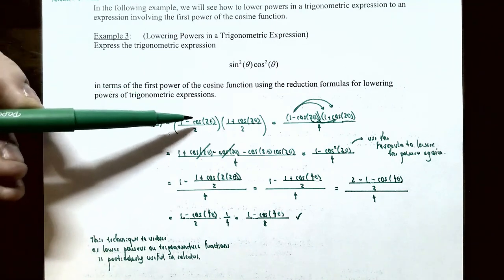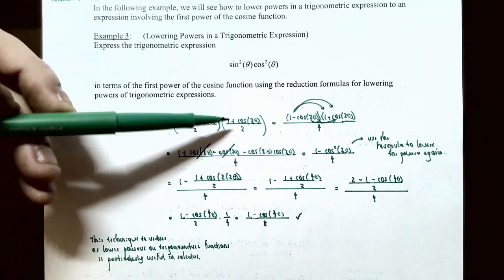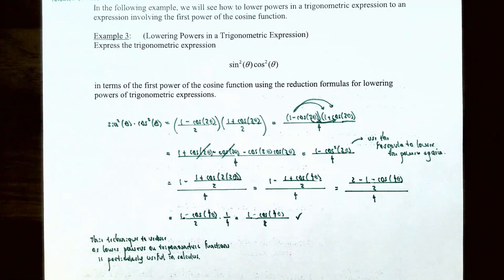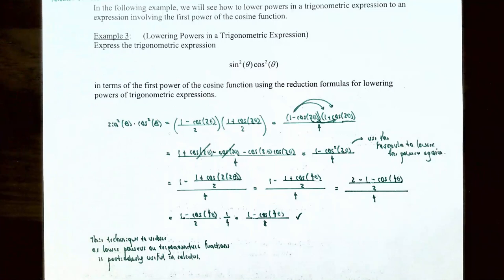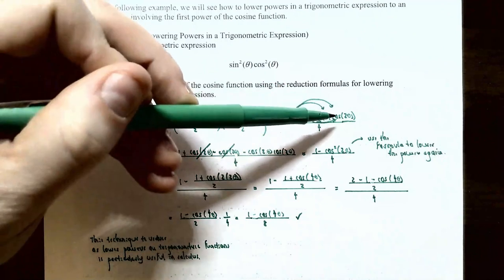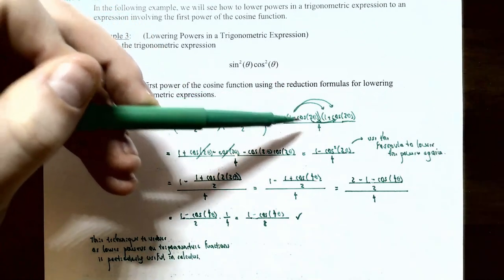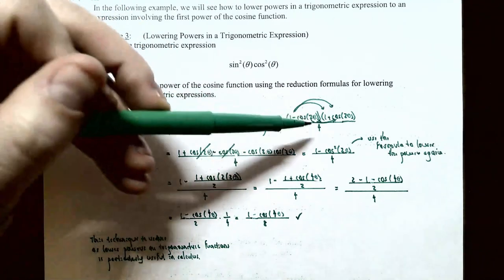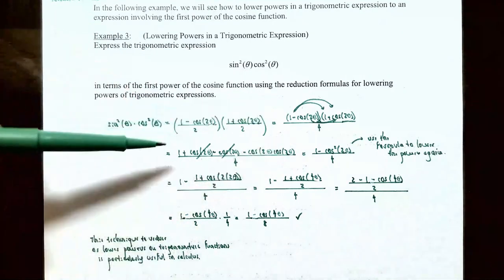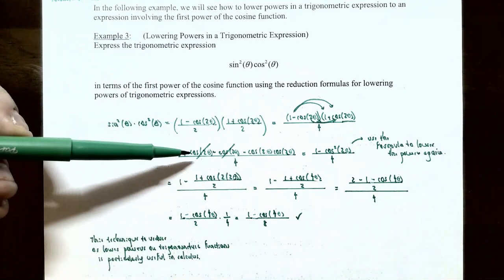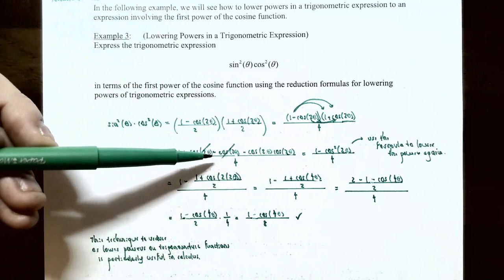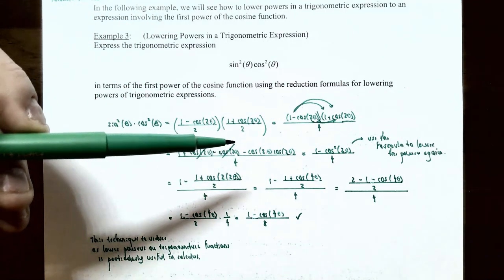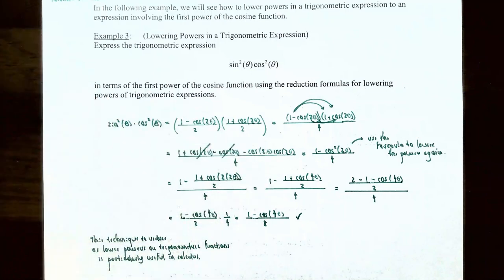We now multiply: [(1 − cos(2θ)) / 2] × [(1 + cos(2θ)) / 2]. The numerator has two terms each, so we use the FOIL method: 1·1, 1·cos(2θ), −cos(2θ)·1, and −cos(2θ)·cos(2θ). The denominator is 2 × 2 = 4. Expanding the numerator gives 1 + cos(2θ) − cos(2θ) − cos²(2θ), all over 4.